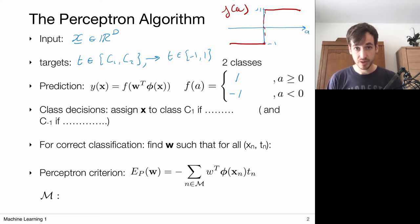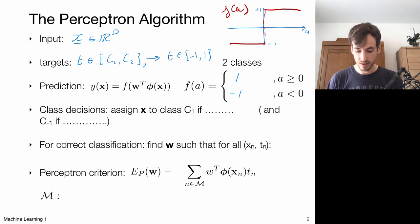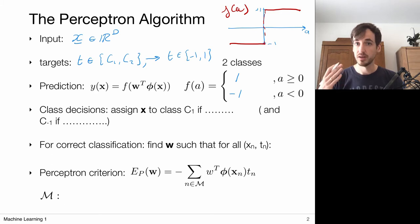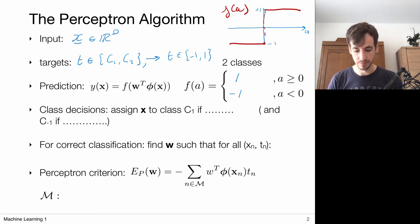So my predictive model takes as input a vector x, maybe computes a new feature vector using the basis functions, then applies this linear model and pulls it through this activation function, which then gives the value plus one or minus one, and I've made my prediction.